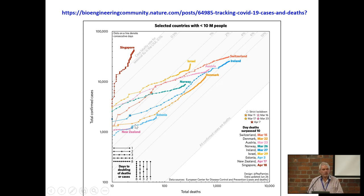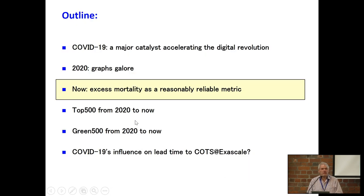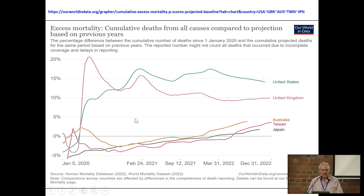How did New Zealand fare? This is the plot for small countries, and there's New Zealand way down the bottom. How did this happen? They listened to the experts and heeded their advice. As a sort of backcasting exercise — here's the excess mortality during the last three years. This is not just COVID deaths, but all deaths compared to a seasonally adjusted forecast. The United States has had something like 15% more deaths than would have been expected based on prior forecasts — 15%, cumulatively since the beginning of 2020. The United Kingdom has had something like 10%.